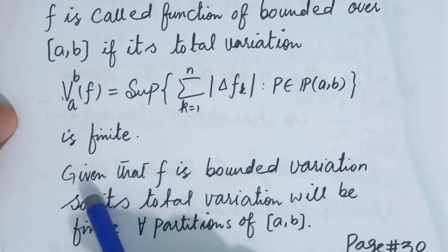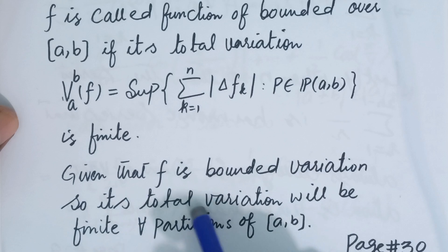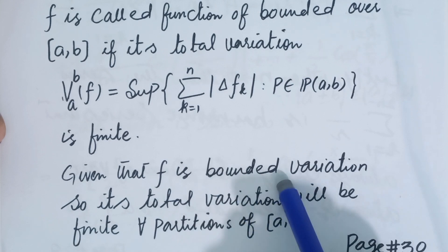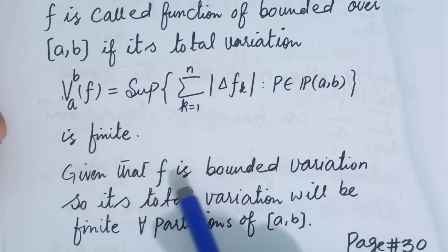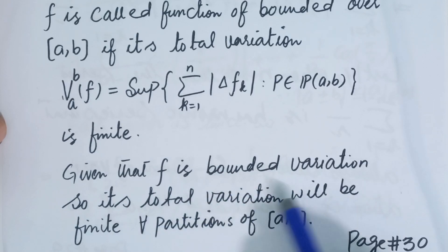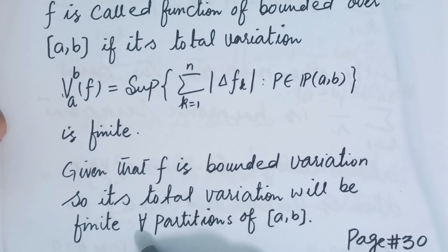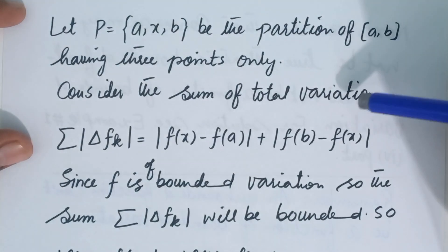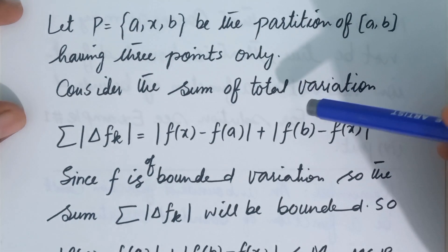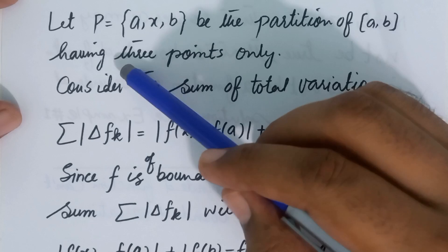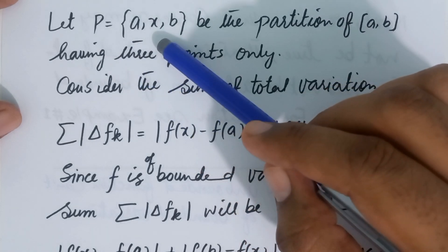Given that f is of bounded variation, its total variation will be finite by definition. We assume f is of bounded variation and our target is to show that f is also a bounded function. Since f is a function of bounded variation, it will be a function of bounded variation for all partitions of the closed interval [a, b].